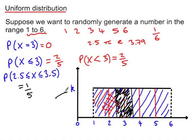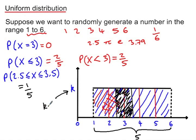What's the value of k here? Remember that the total value of the probability needs to be 1. So if we have a range from 1 to 6, the length of this rectangle is 5, and so k must have a value of 0.2 to make the area of this rectangle equal to 1. This type of distribution is called a uniform distribution, because each number has a uniform probability of being chosen, and because of the shape of the graph, it's also called a rectangular distribution.